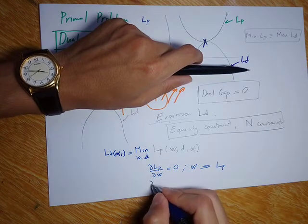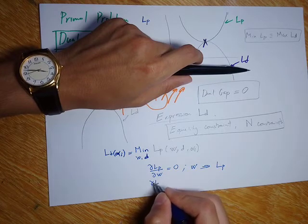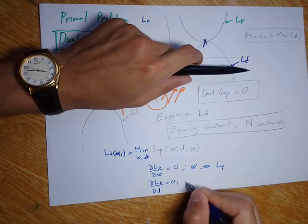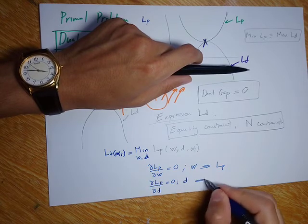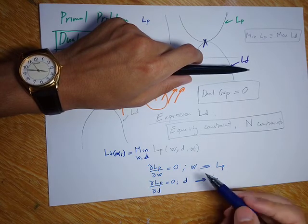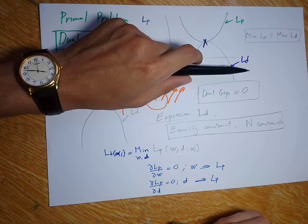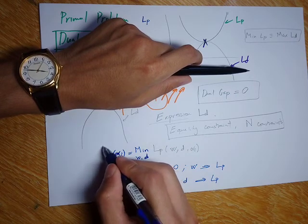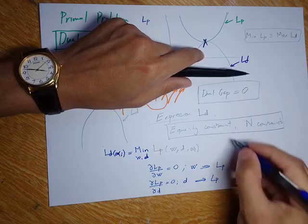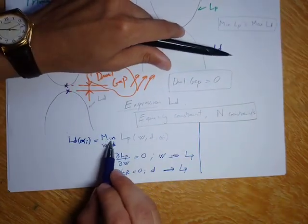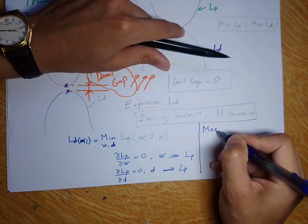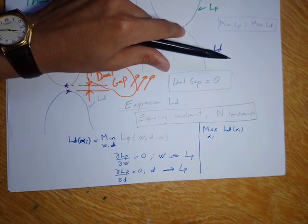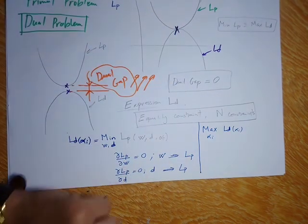We also take the partial derivative with respect to d, solve for d, and substitute it into LP. After replacing the expressions for w and d, we get a new expression that depends only on alpha_i. This becomes our dual problem LD. To solve it, we need to maximize this expression for alpha_i, and that is how we solve this optimization problem.